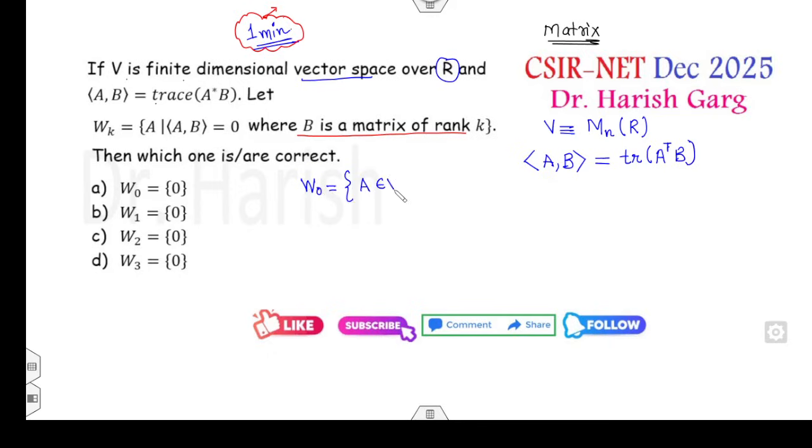What is your inner product? That will be trace of, because this is real so the star becomes transpose. Now look at W_0. What is the meaning of W_0? Collection of all those A in V such that inner product is 0, where B is a matrix of rank 0. If B is matrix of rank 0, that means B must be 0. If B is 0, then this definition becomes, so what is the value of A? A is nothing but complete V. So W_0 is nothing but V. But they said 0, so option A is canceled.